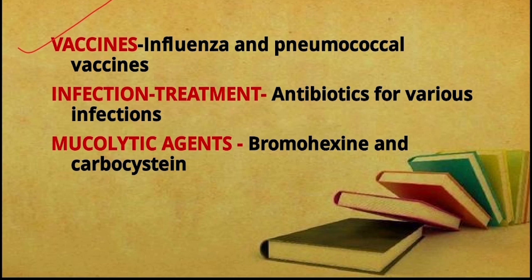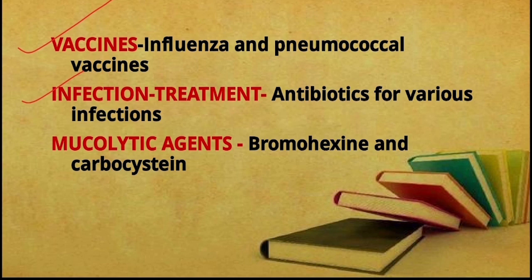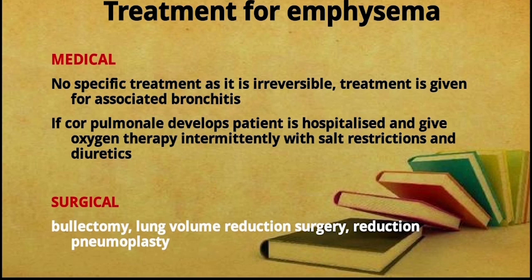Continuing the ABCDVIM mnemonic: V — vaccines for influenza and pneumococcal infection, as patients with bronchitis have high risk for these. I — treat infections with antibiotics for superadded infections. M — mucolytic agents such as bromhexine and carbocysteine. A separate video will cover pharmacological dosages in more detail.